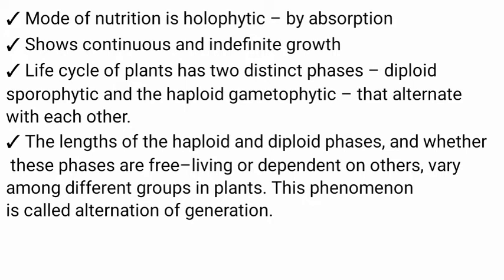The life cycle of plants has two distinct phases: one is the diploid sporophytic phase and the second is the haploid gametophytic phase. These two alternate with each other. The lengths of haploid and diploid phases, and whether these phases are free-living or dependent on others, vary among different groups in plants. This phenomenon is called alternation of generation.